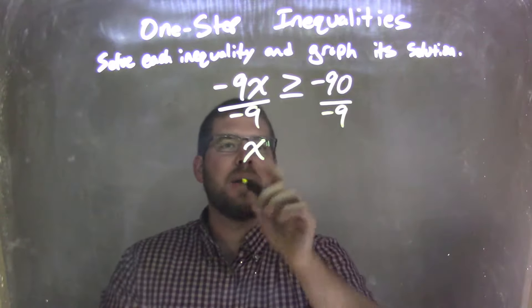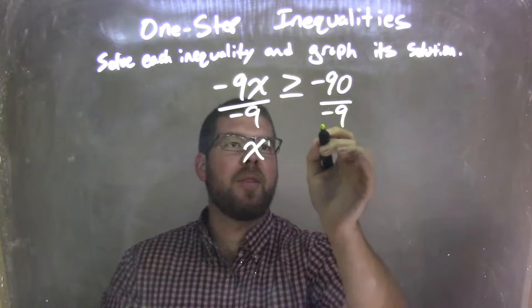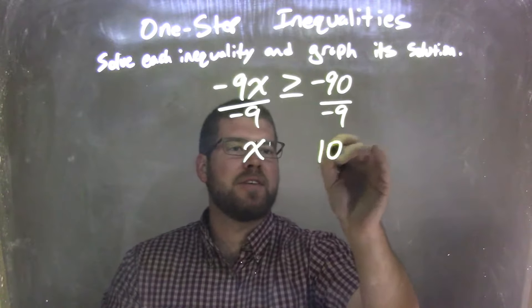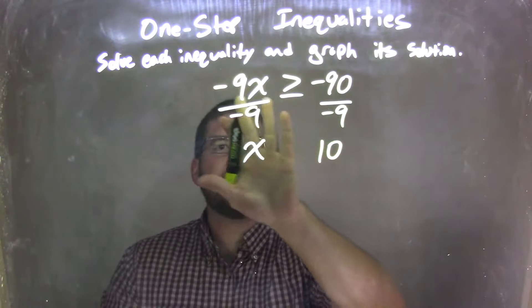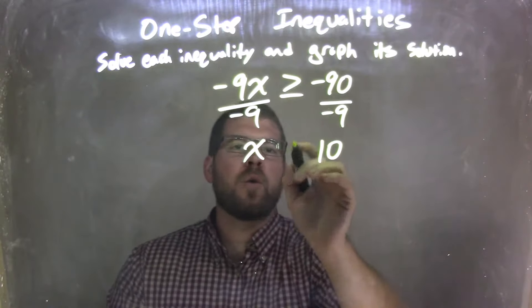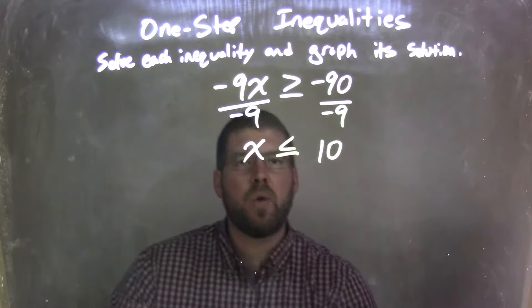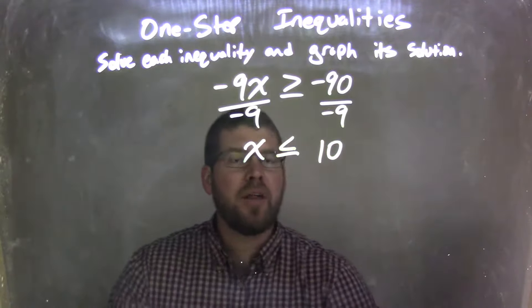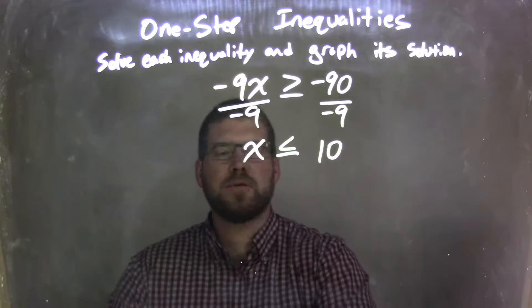By doing that, I'm left with the x, and then on the right, negative 90 divided by negative 9 is a positive 10. But since I divided by negative over inequality, I need to flip the inequality. So my greater than or equal to sign turns into a less than or equal to sign.